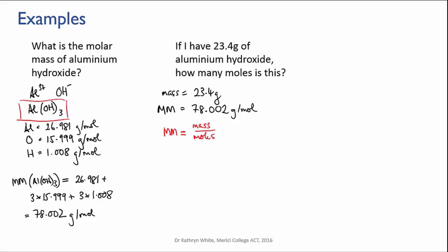I can rearrange that to make moles the subject. I multiply both sides by moles and divide both sides by molar mass, and that gives me that the moles equals the mass over the molar mass. Then all I have to do is substitute in the values that I know and get the answer. And because my mass had three significant figures, I'm going to round this off to three sig figs.